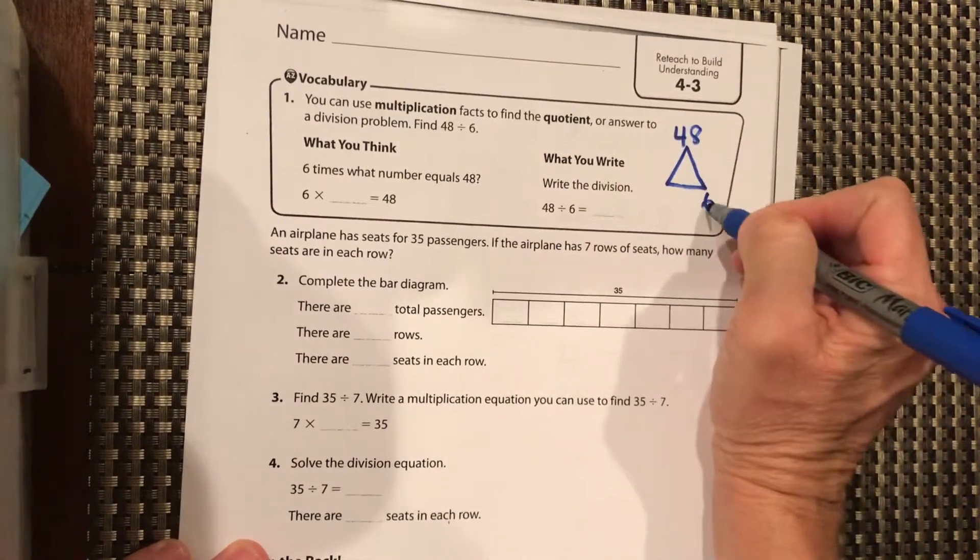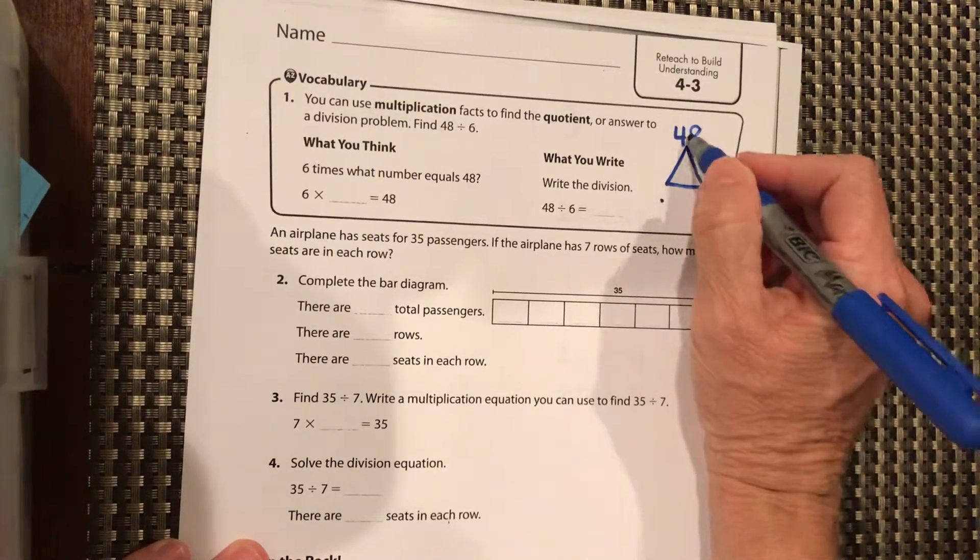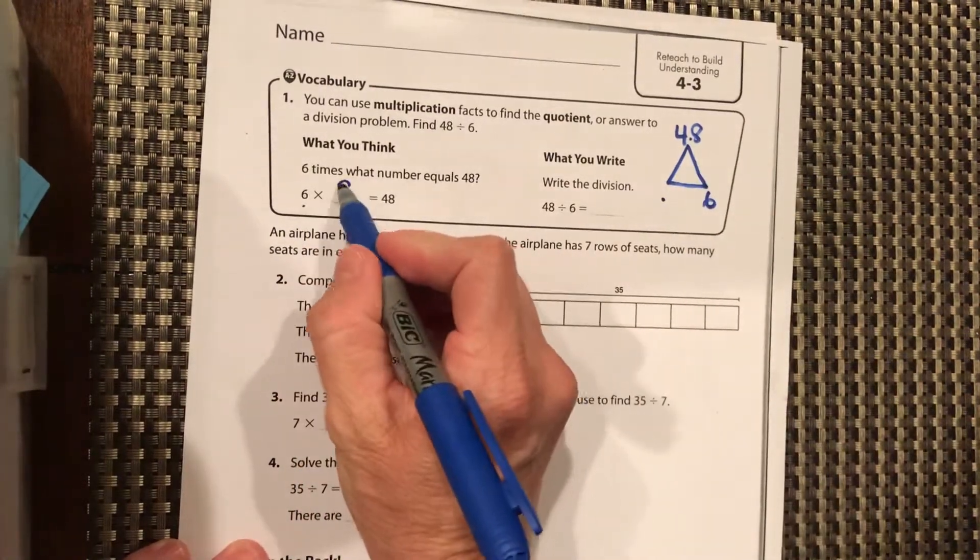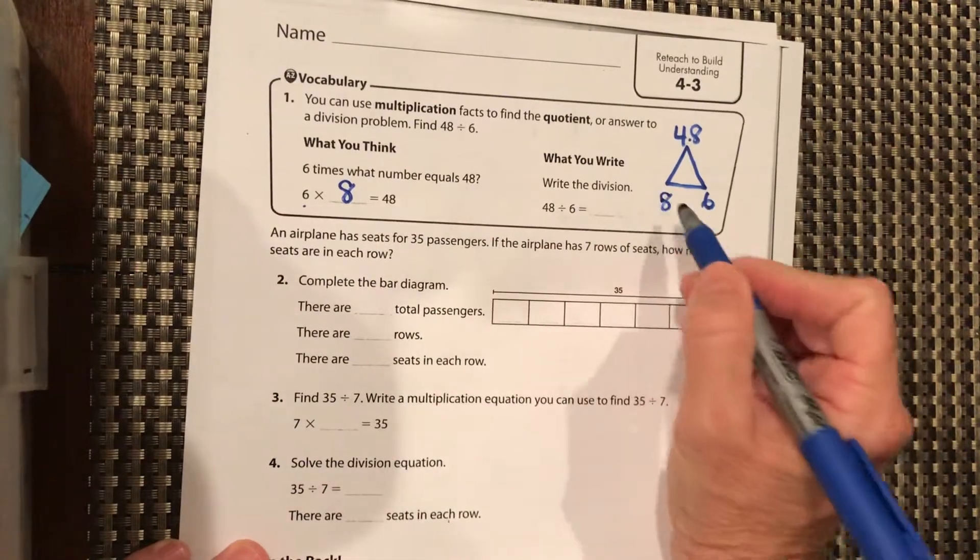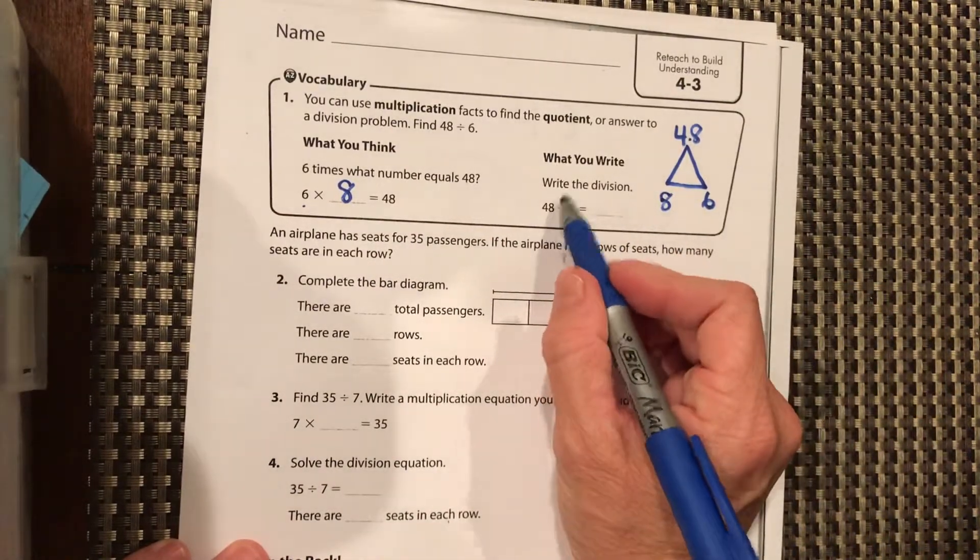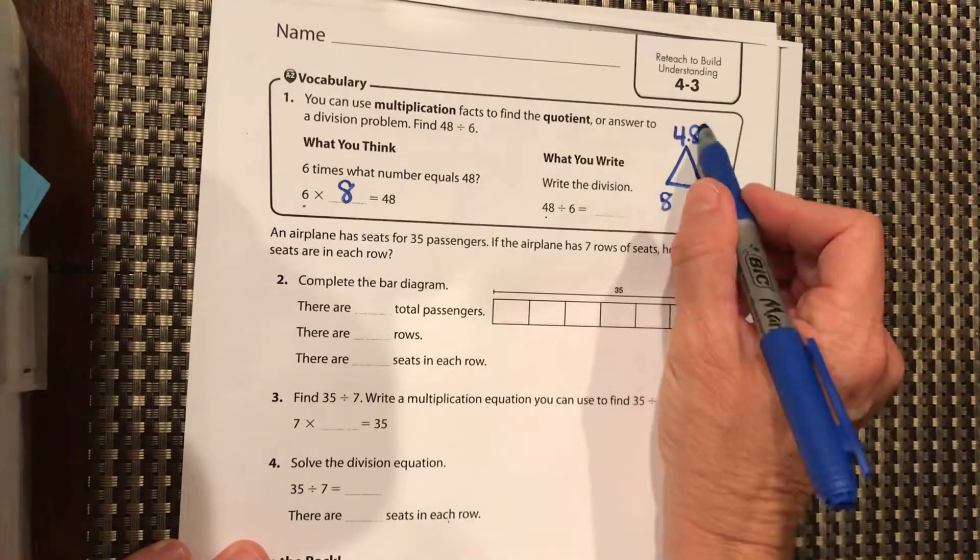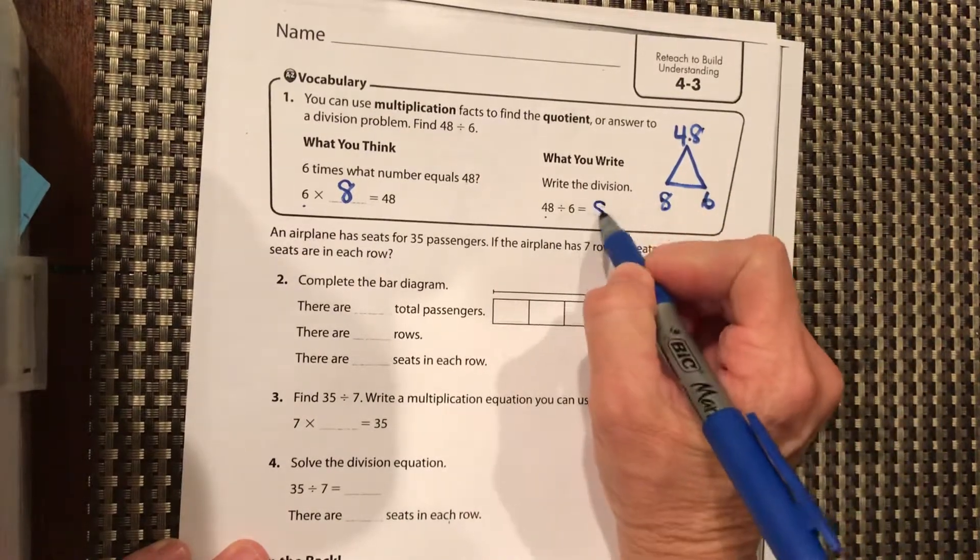We put 6 here. We want to ask ourselves, 6 times what is 48? So 6 times 8 is 48, and so our division problem then is 48 divided by 6 equals 8.